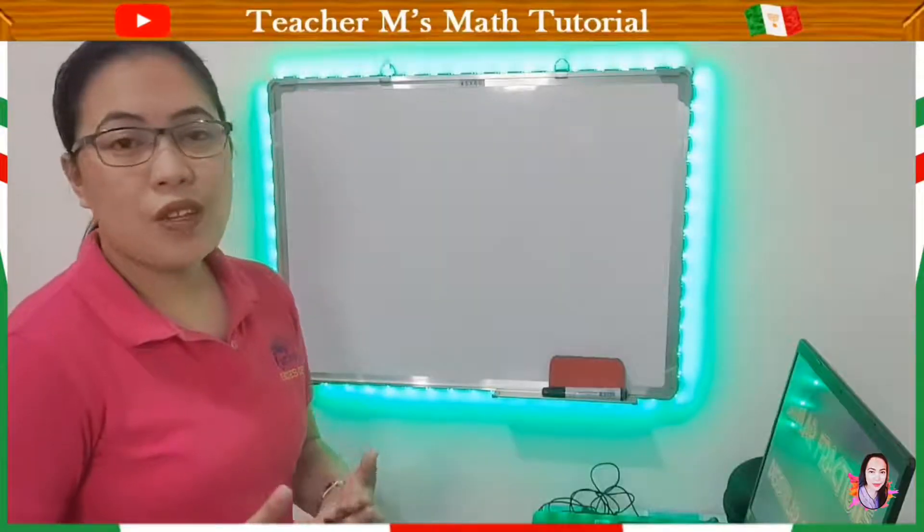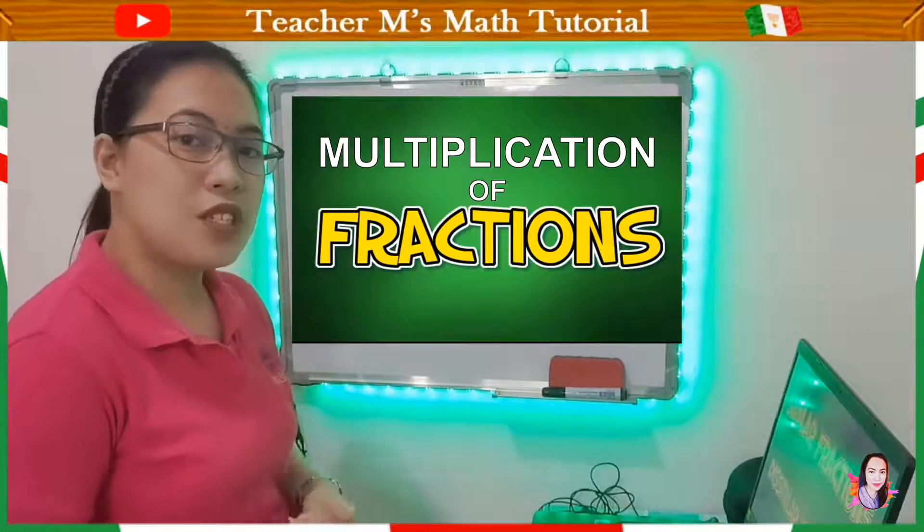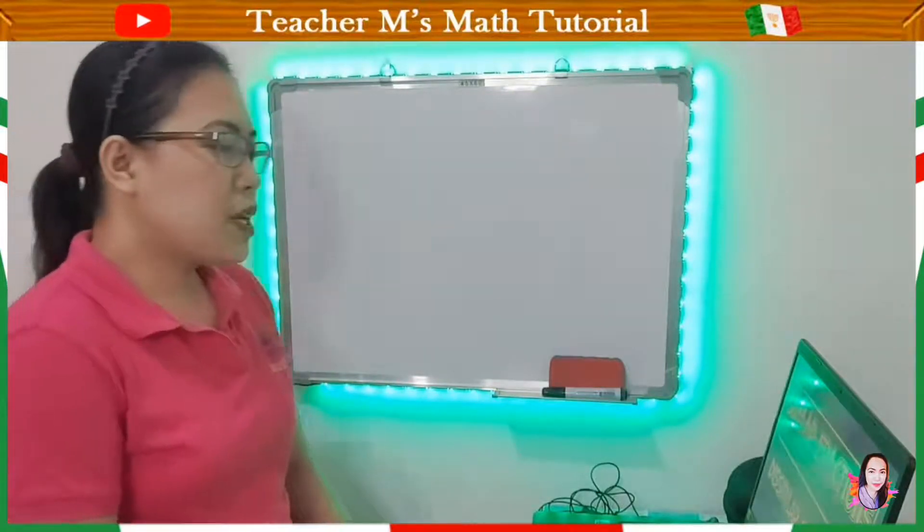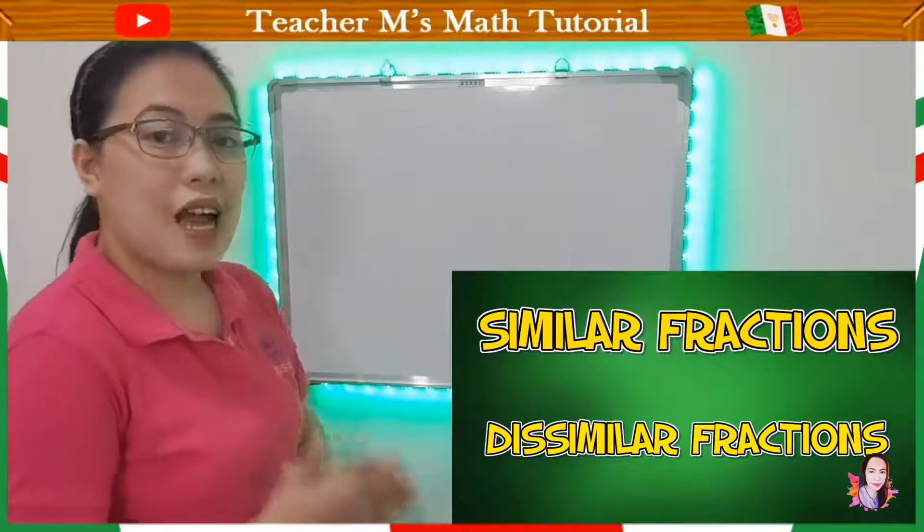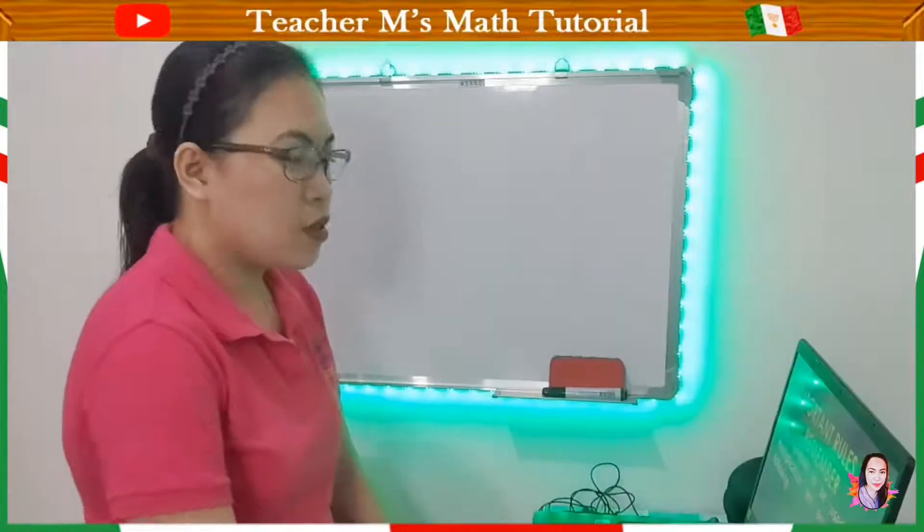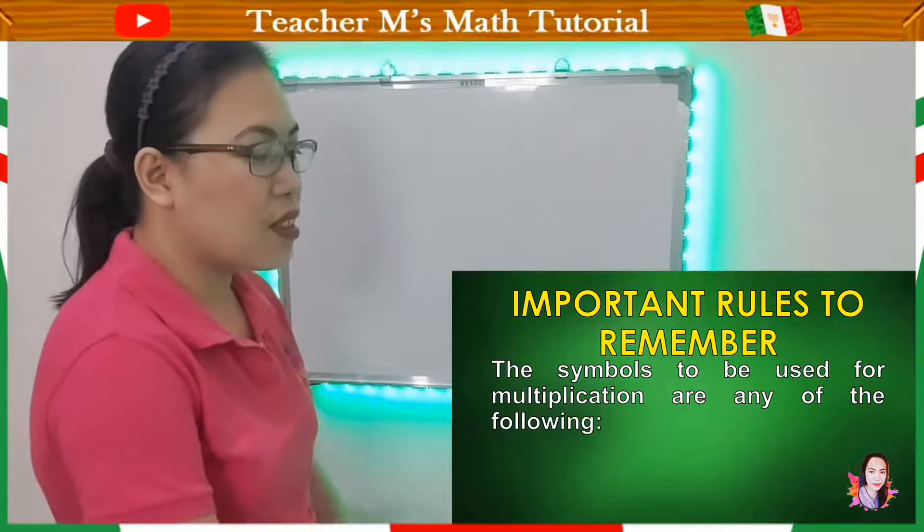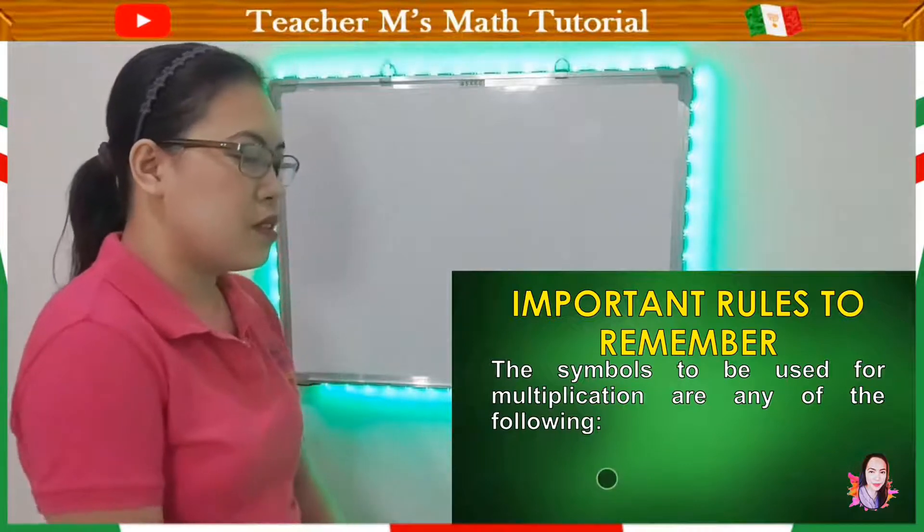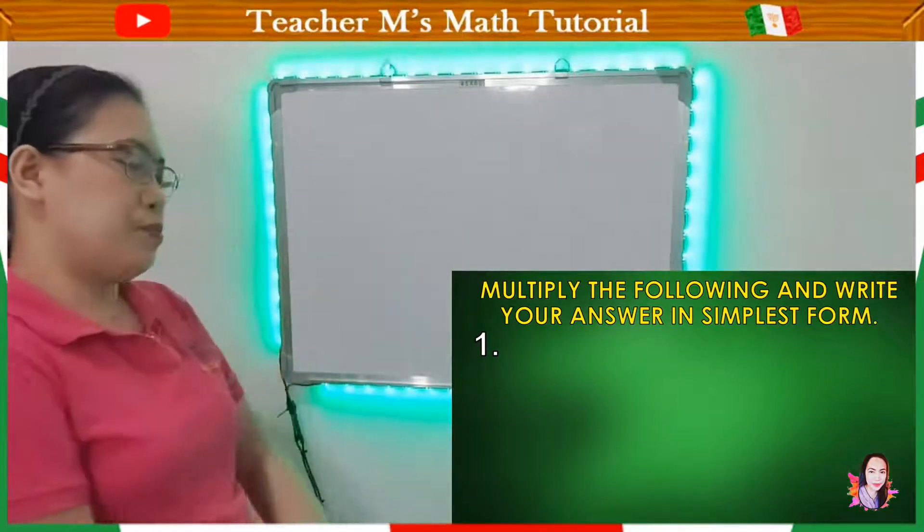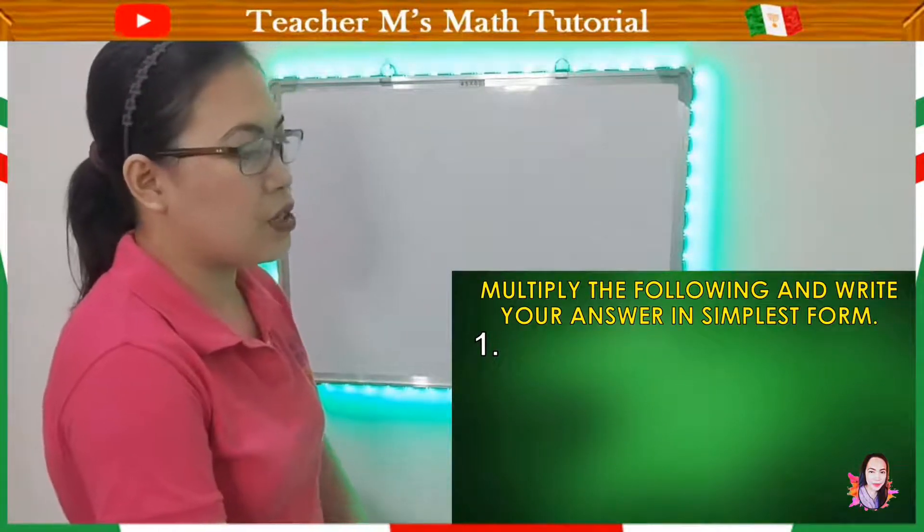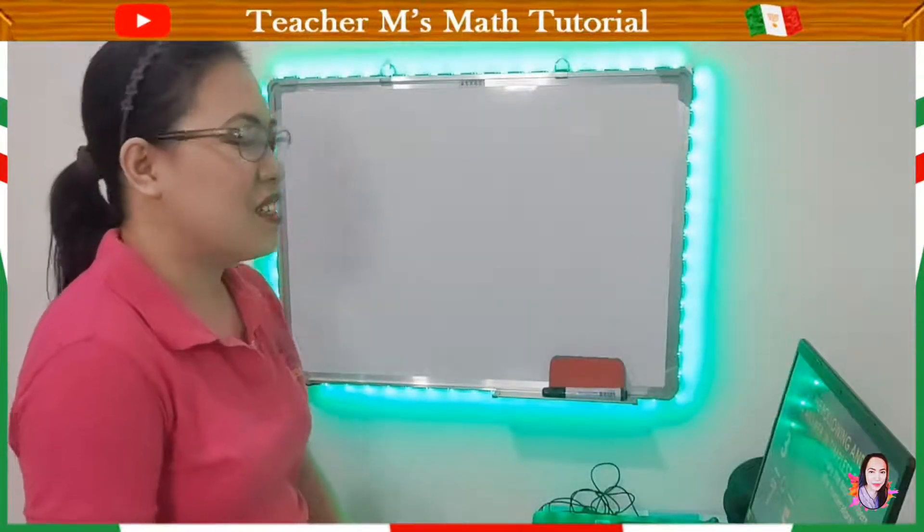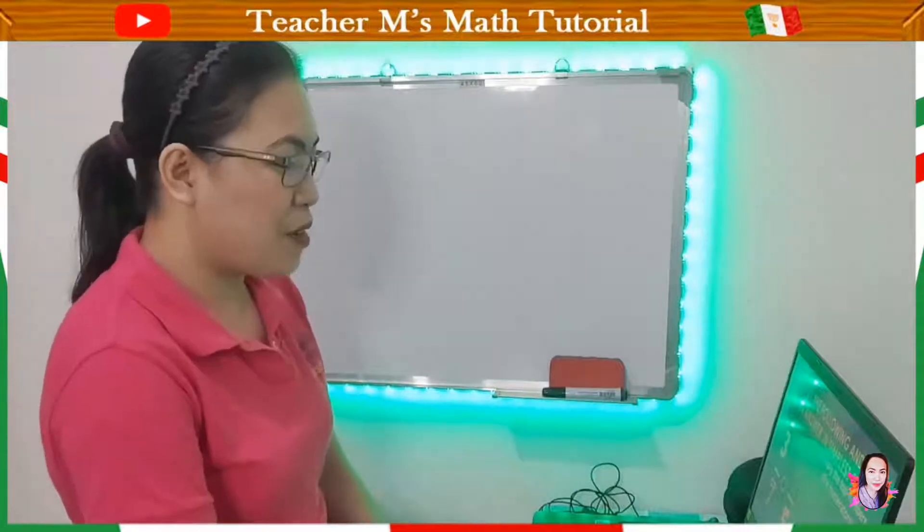So continuation pa rin ito ng ating lesson about operations on fractions specifically about multiplication. So in multiplication of fractions, hindi na natin kailangan i-consider kung similar fractions or dissimilar fractions. So ito yung mga symbols na ginagamit na nag-i-indicate na ito ay multiplication. So lahat ng yan ay multiplication symbols. So let's proceed now to number one. Multiply the following and write your answer in the simplest form. Basta marunong kang mag-times or mag-multiply ng numbers, kaya-kaya nyo na. Kahit fractions kaya nyo.